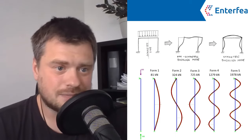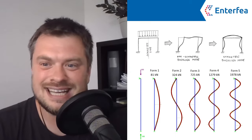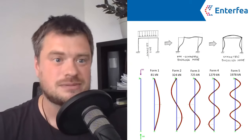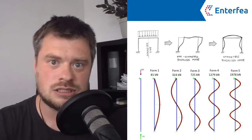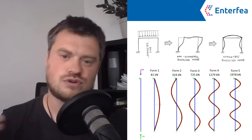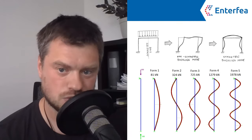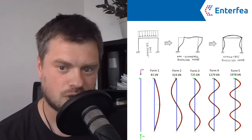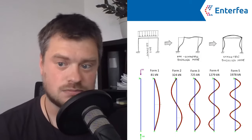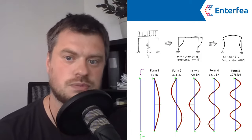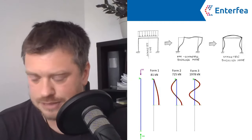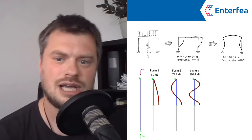Another mistake — one I didn't make myself but have seen happen — is assuming symmetry. You can see a frame that is perfectly symmetric in geometry and loading, but the response is not symmetric. If you enforce symmetry boundary conditions, you force the response to be symmetric when it isn't. Below, a column modeled as a whole shows several buckling forms; if you enforce symmetry, you miss some of them. On the frame shown, the first buckling mode is actually unsymmetric, so losing it would significantly impact the design.